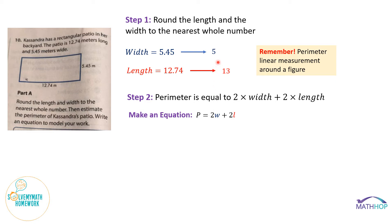We've already rounded our width and length values. We're going to pop them into our equation. So we're going to get P equals two times five plus two times 13, which gives us 10 plus 26, which gives us an approximate perimeter of 36 meters.